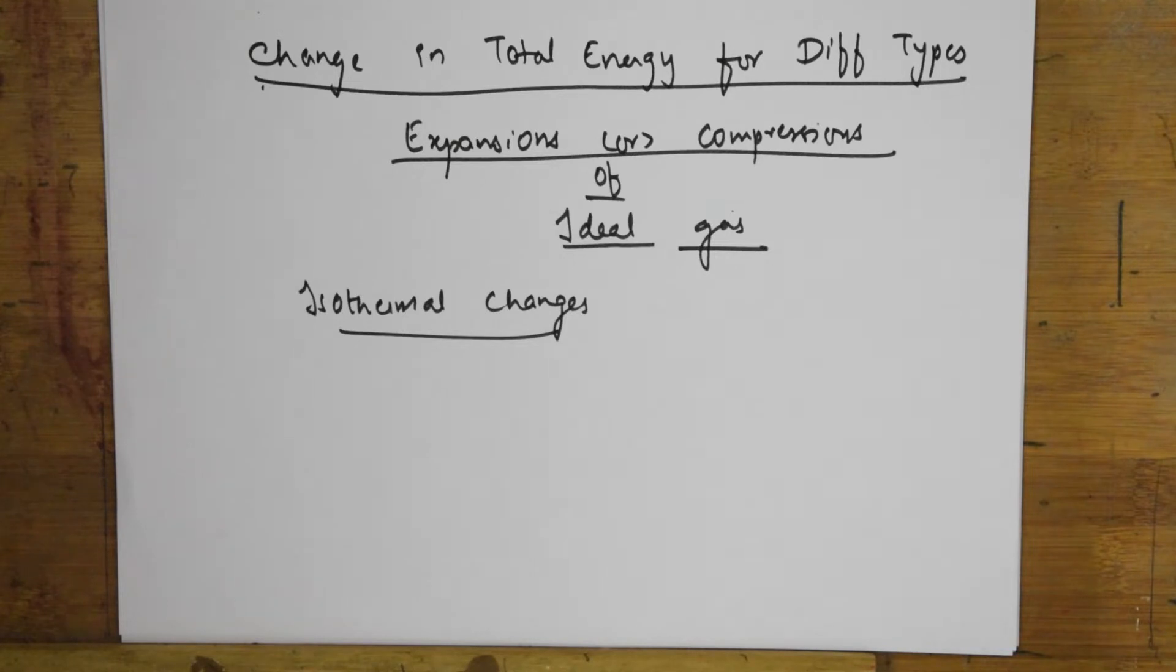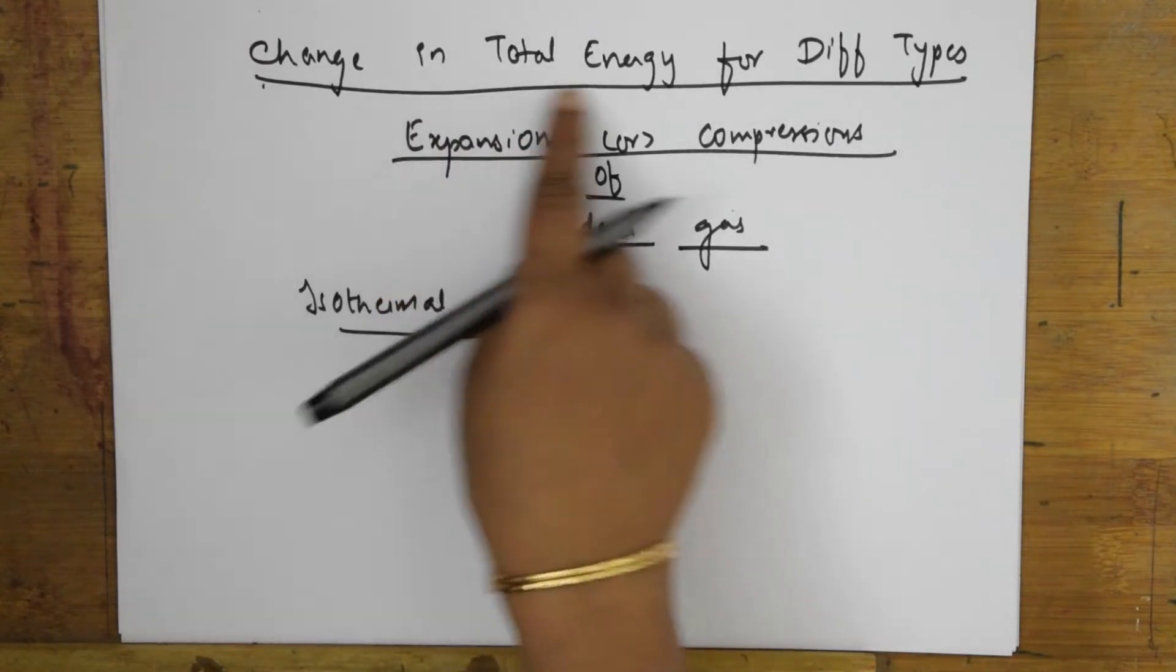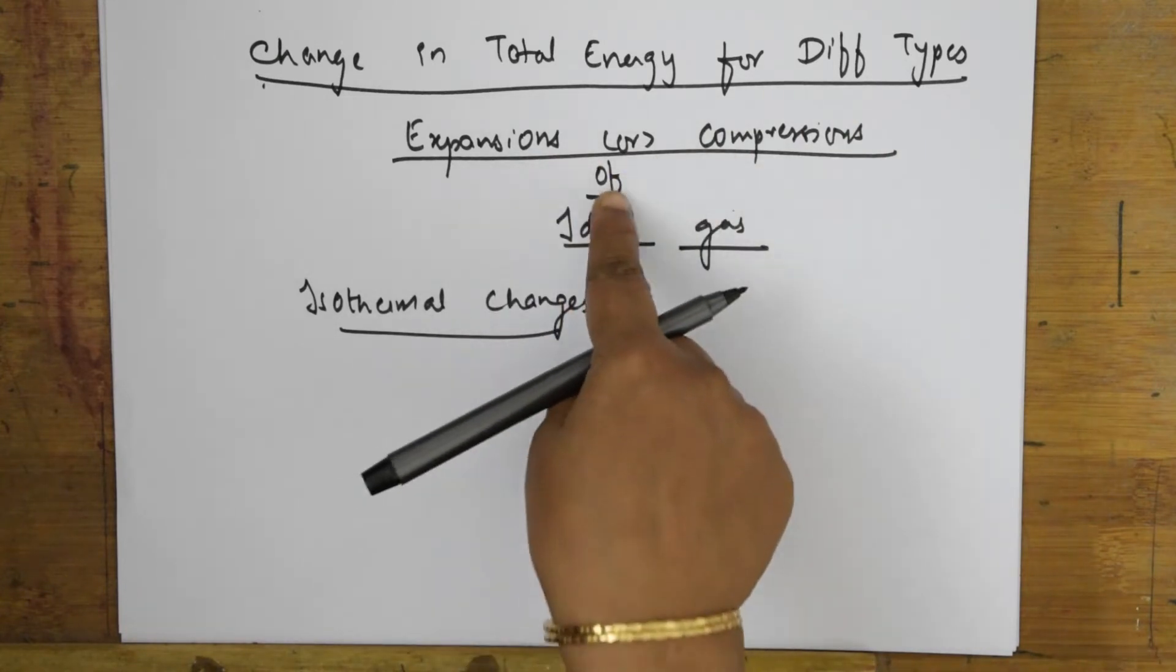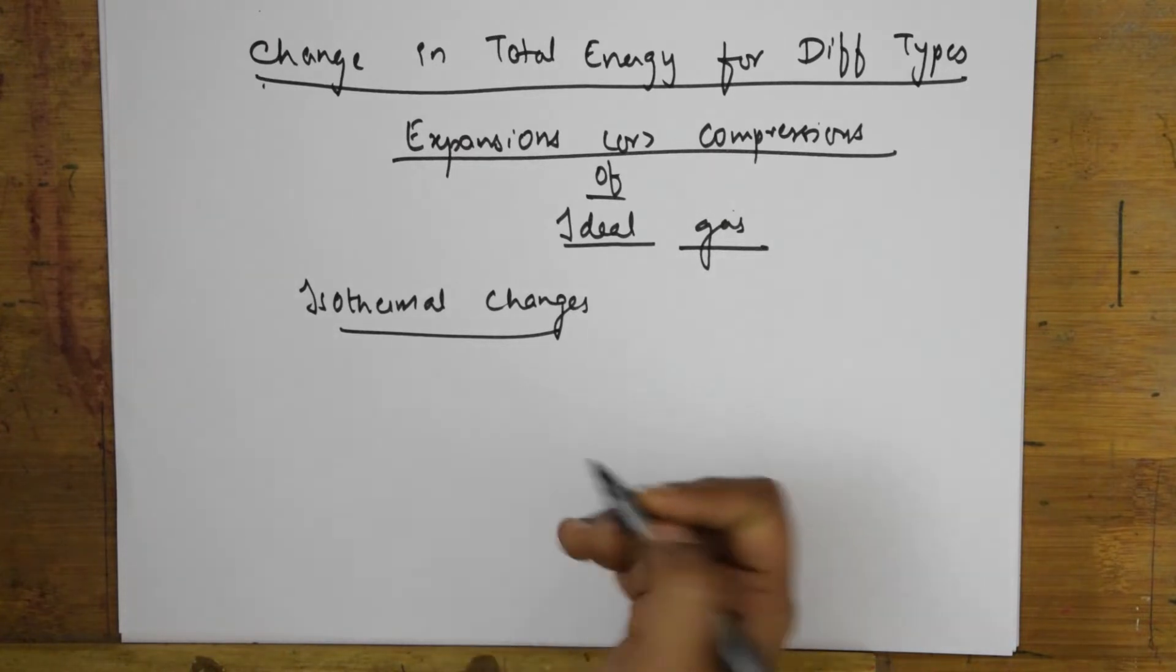Now I'll be teaching you about the isothermal changes. I wrote here change in total energy for different types of expansions or compressions of ideal gas. In the previous video I taught you what actually is spontaneity, then I related spontaneity to entropy. I also taught you what is entropy and its relation to disorderness.